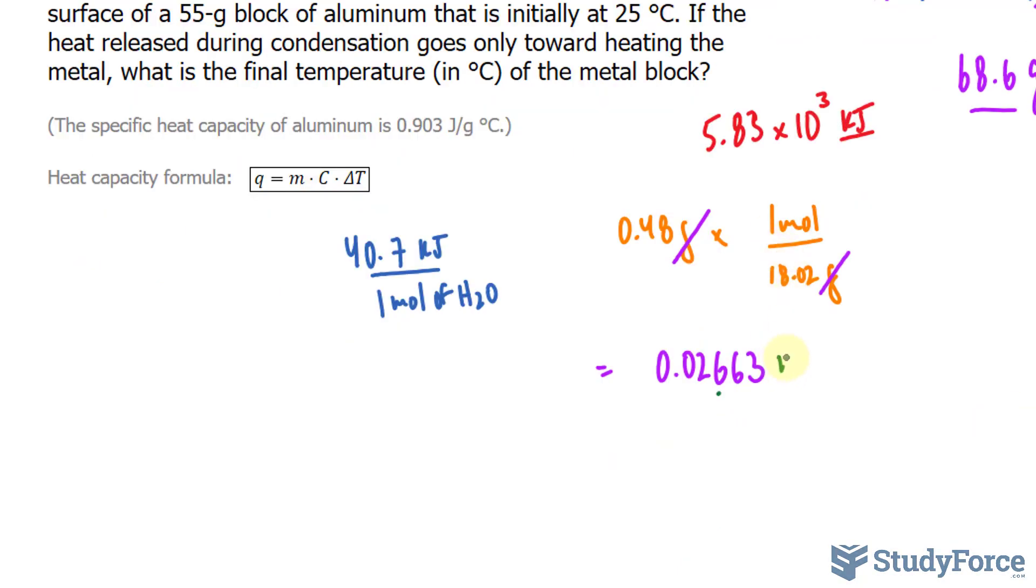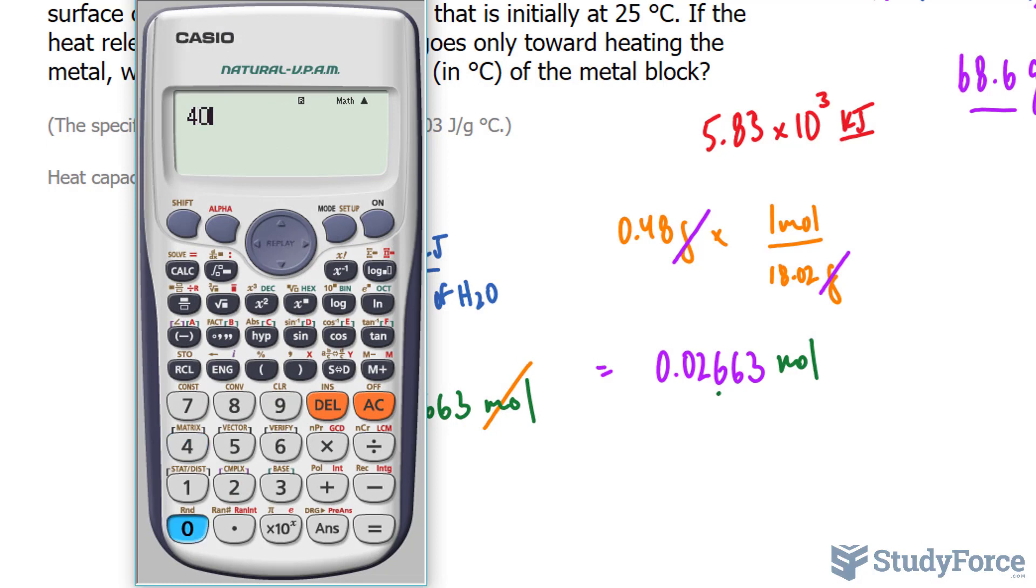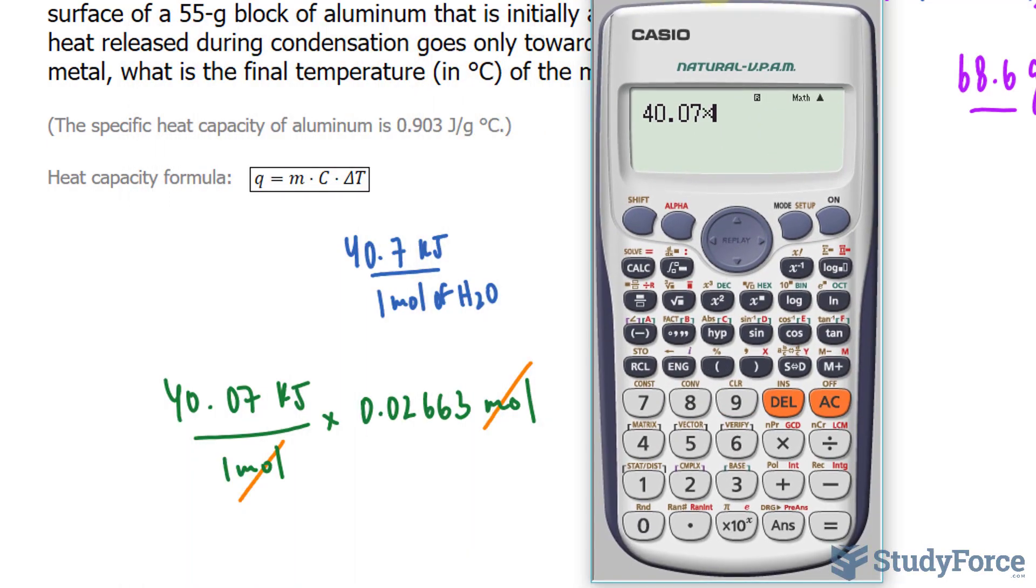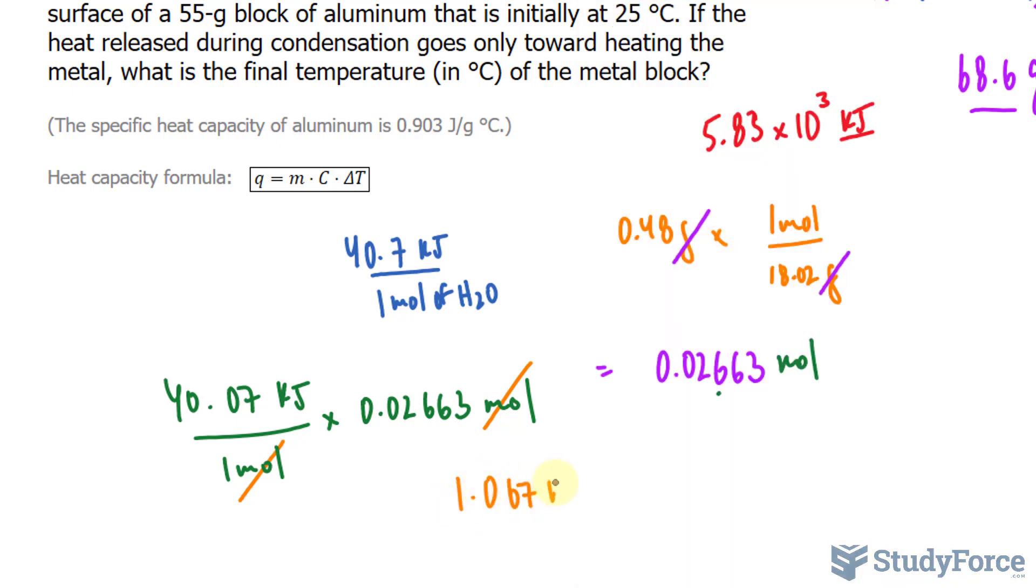I'll take this number now, which is in moles, and I'll multiply it to this. This cancels out, and we're left with 40.7 times 0.02663, and we get 1.067 kilojoules. This has to be two significant figures. Don't forget. Don't round now. So I'll just put a dot right underneath here, and this is the amount of energy that is released.